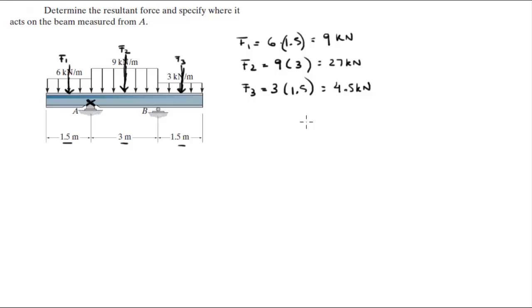So when you add these three together you get the resultant force, all you have to do is add them together because they are all aiming the same way. Let's say going down is positive, so the resultant force comes out to be 40.5 kN.